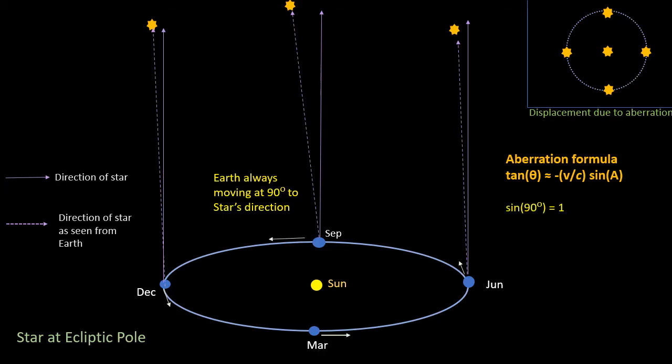And because the sine of 90 degrees is 1, tan theta is simply minus V divided by the speed of light C, which comes out as 9.94 times 10 to the minus 5. This means that theta is minus 20.5 arc seconds. This is a very small angle, roughly 1/90th diameter of how big the Moon appears in the sky.